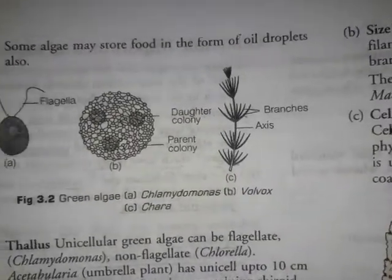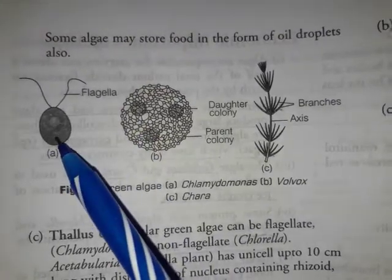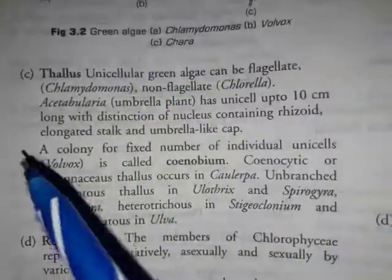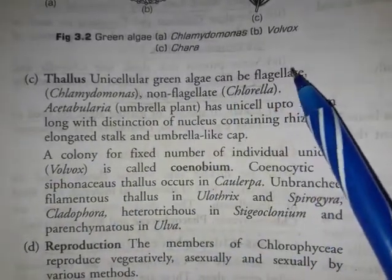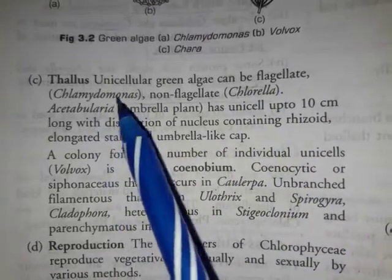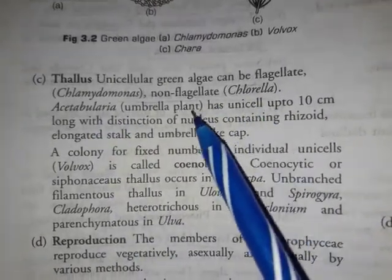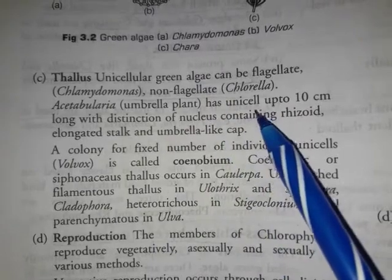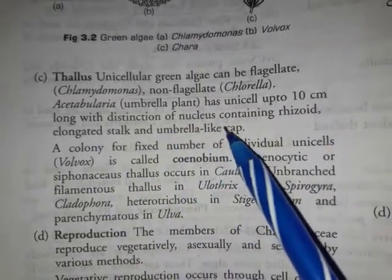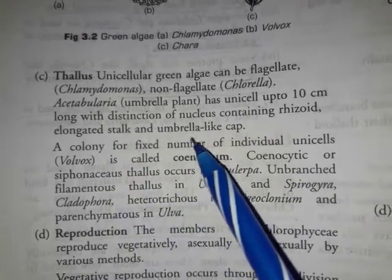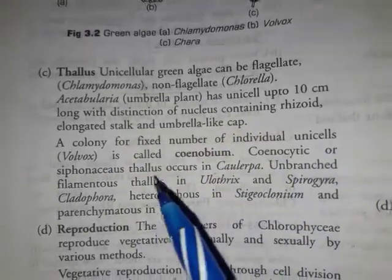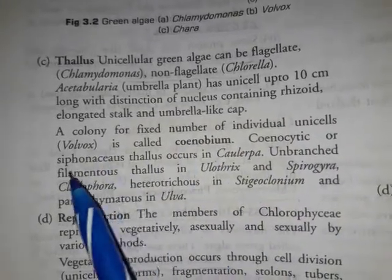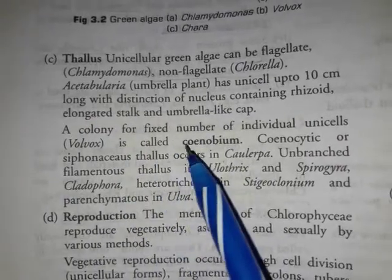This is Chlamydomonas — a unicellular green alga that can be flagellated. Acetabularia is an umbrella plant with a unicell up to 10 cm long, distinguished by a nucleus, containing rhizoids, an elongated stalk, and an umbrella-like cap. Volvox is in colonial form with a fixed number of individual unicells — this is called the coenobium condition.